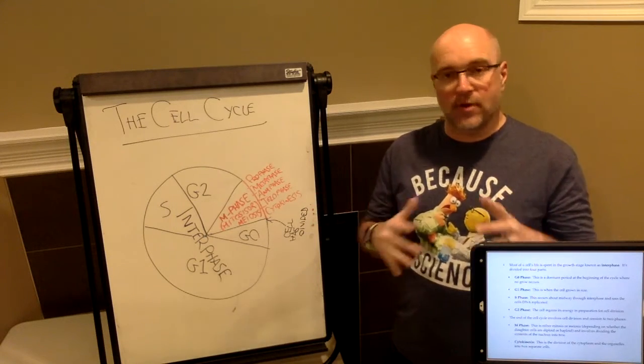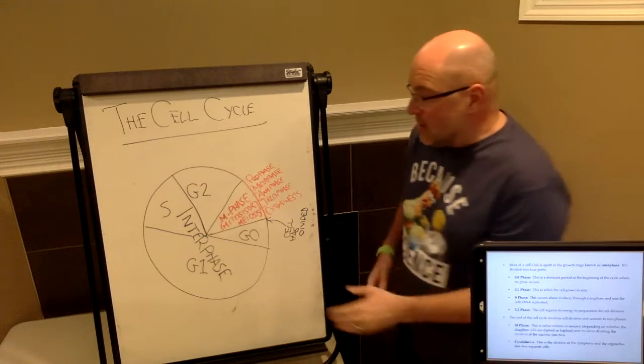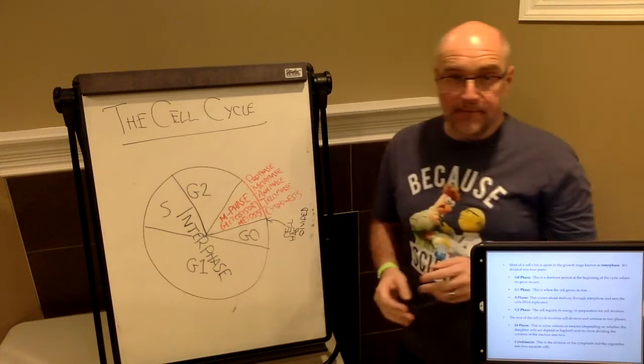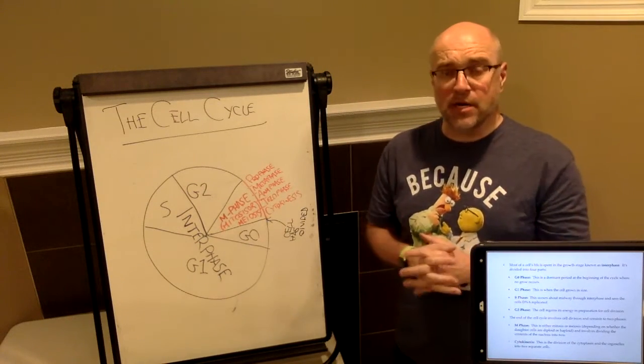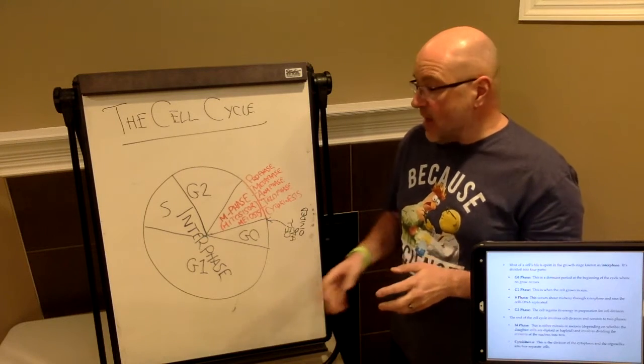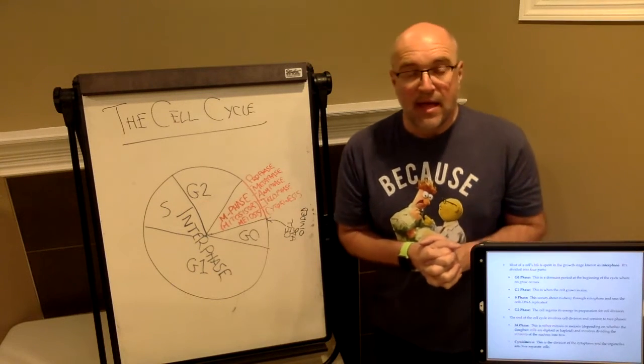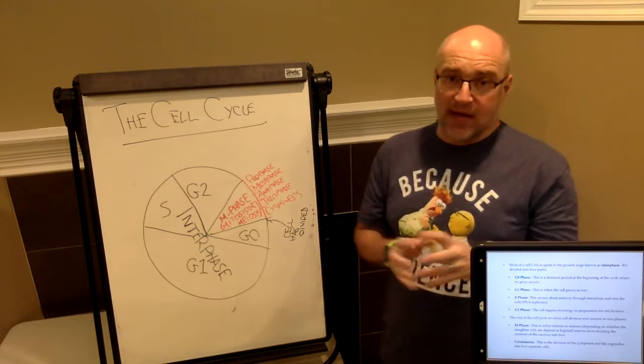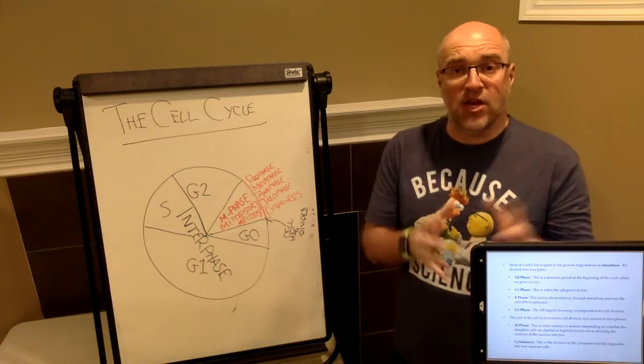So that's when the cell decides, okay, I've got to now divide. So at the end of G1, in preparation for that cell division, the cell will now enter into what's called S phase. And the S phase is, we discussed this last day as well, or in the last video as well, we discussed that genetic material has got to duplicate before cell division.